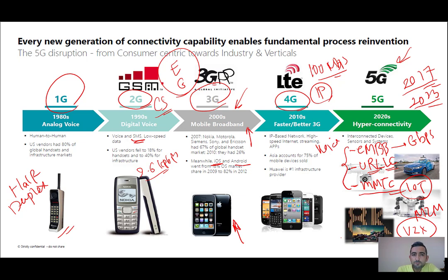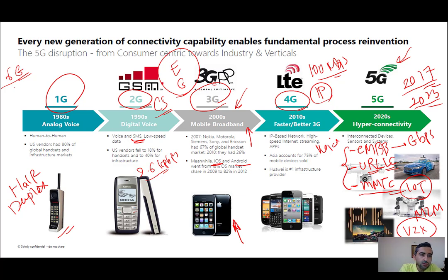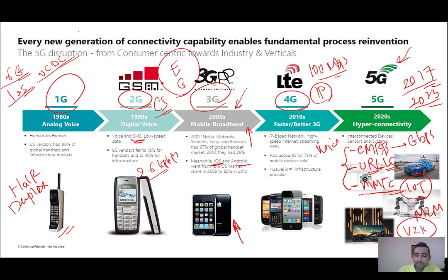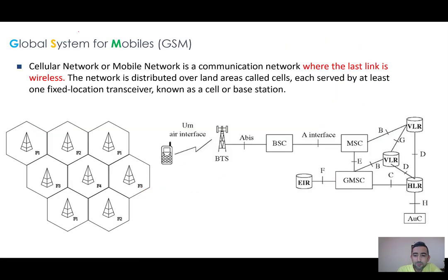Currently, some researchers at leading universities are working on 6G. It has very interesting proposed services, such as the Internet of Space — providing internet connectivity in space — as well as unconventional data communications with AR and VR, and many other new applications that we'll discuss in future sessions.